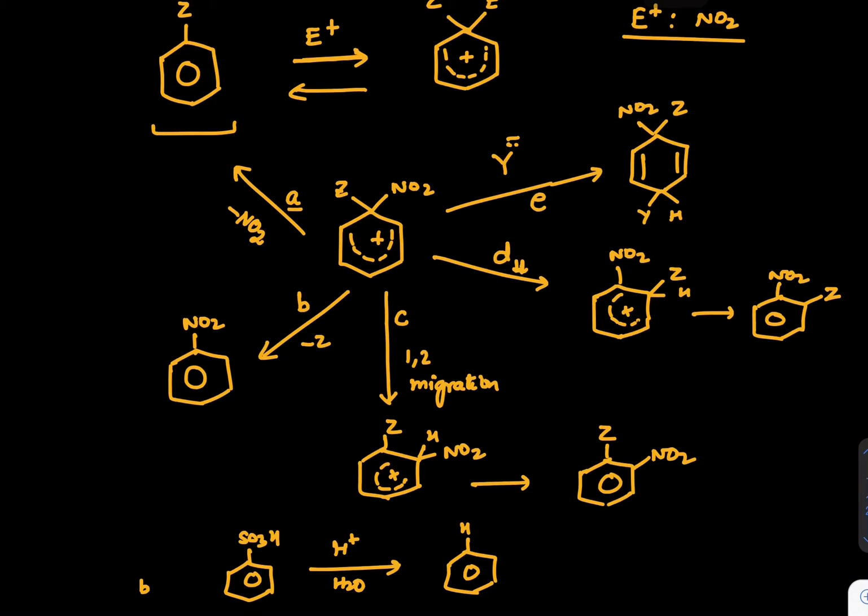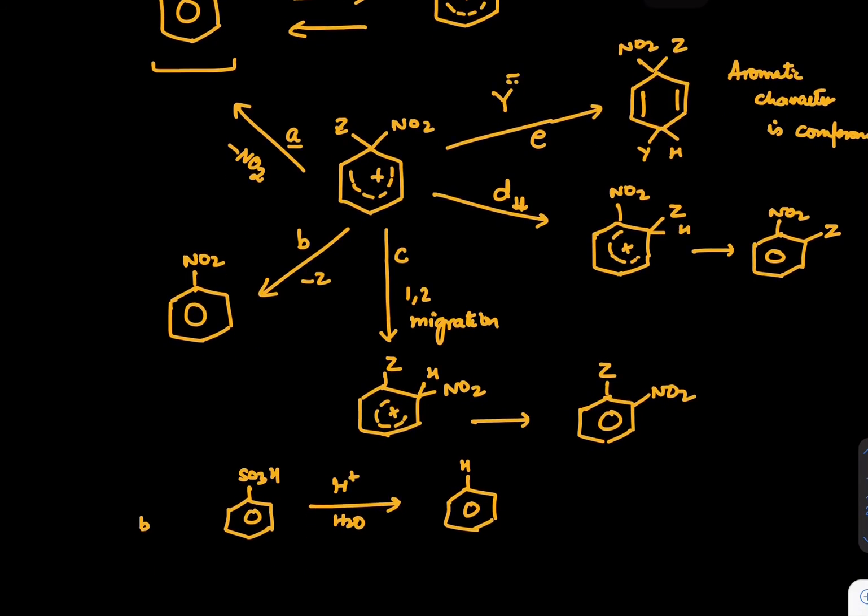And the last one is NO2, Z. It is like you are spoiling the aromatic character of the ring. So aromatic character of the ring is compromised. Aromatic character is compromised. Hence, this is also having less chance. But these are the five ways in which this particular reaction can take place.